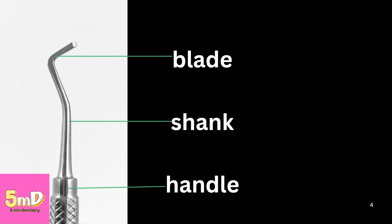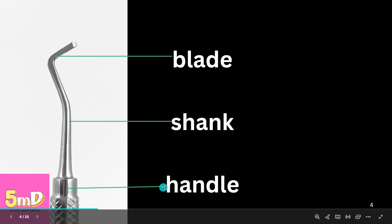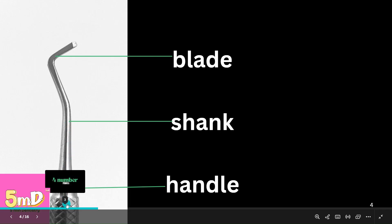Before that, you need to know the basic parts of the instrument. This part is known as the blade, shank, and handle. This is a standard enamel hatchet which we see in operative dentistry.